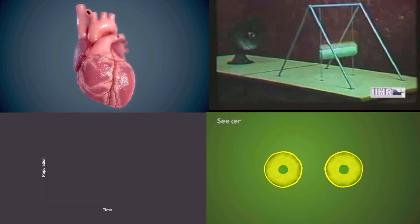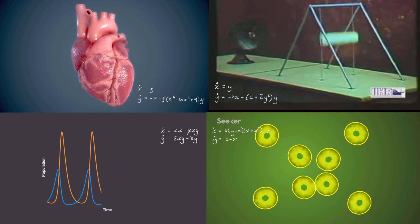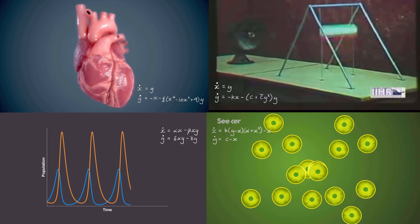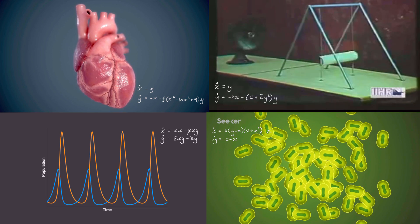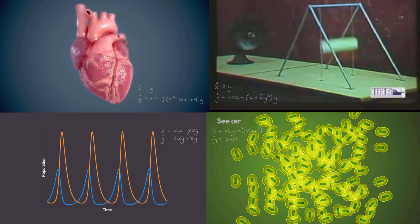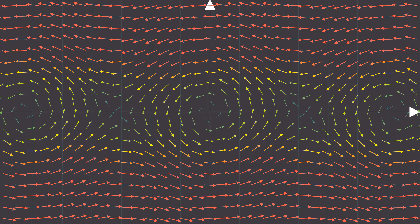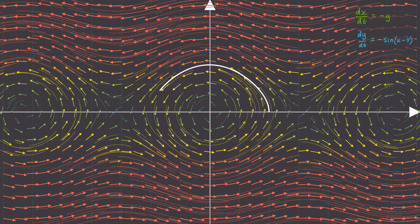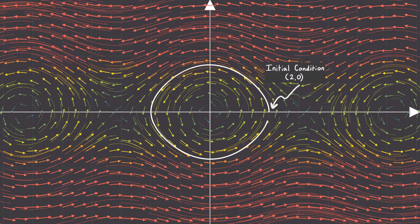All of these phenomena can be modeled with nonlinear differential equations, and somewhere hidden behind these equations is the key to understanding their potentially very complicated oscillatory behavior. So let's consider the phase plane of this nonlinear differential equation. Let's plot the trajectory of this particle numerically with an initial condition of x equals 2, y equals 0.